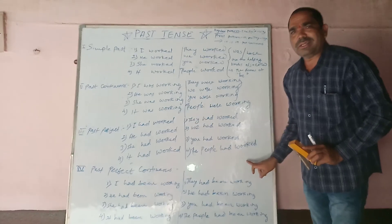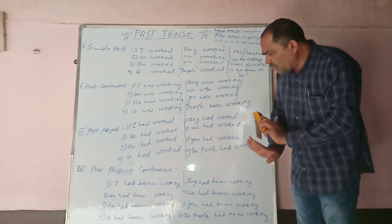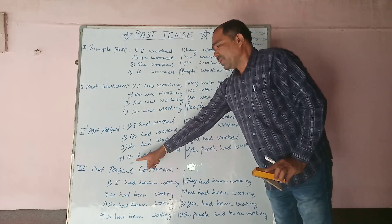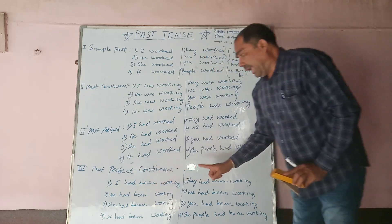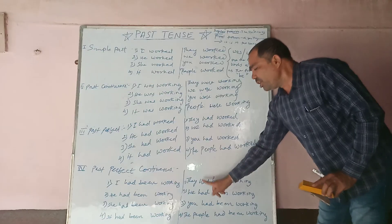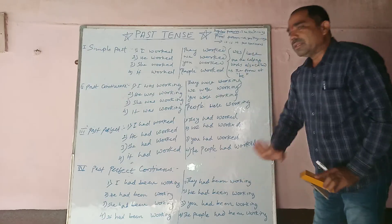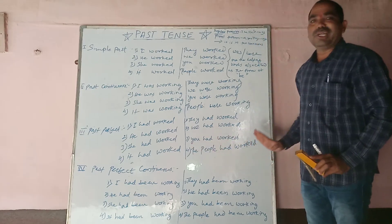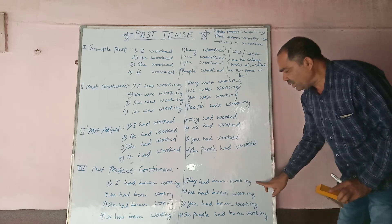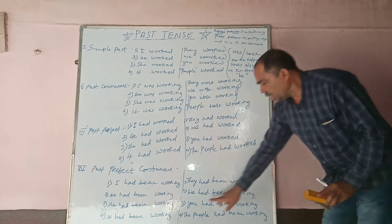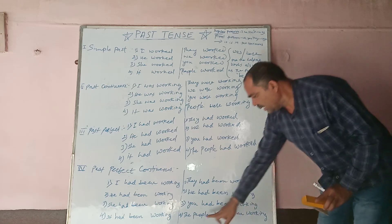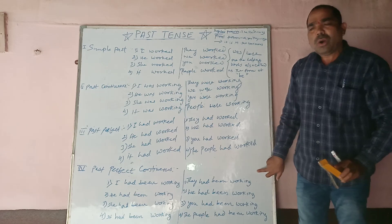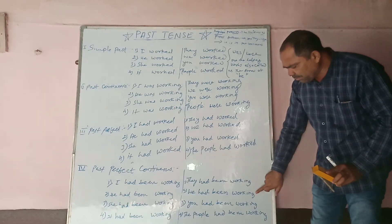In past perfect continuous, we should not make any change at all. As suggested earlier, when we use the singular pronoun there is no change, and when we use the plural pronouns there is also no change in past perfect continuous tense. For example: they had been working, we had been working, you had been working, the people had been working.